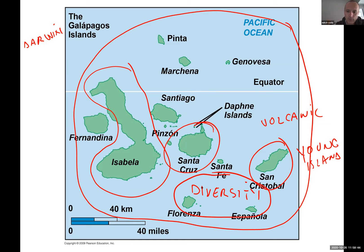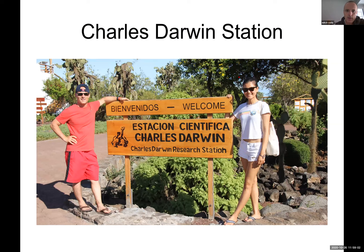Diversity is the key word when we talk about evolution. The more diverse they are, the more different organisms are there and they interact with each other. You'll also notice these islands are close to the equator, so there's a lot of sun there. Here is the Charles Darwin Scientific Center on Santa Cruz.